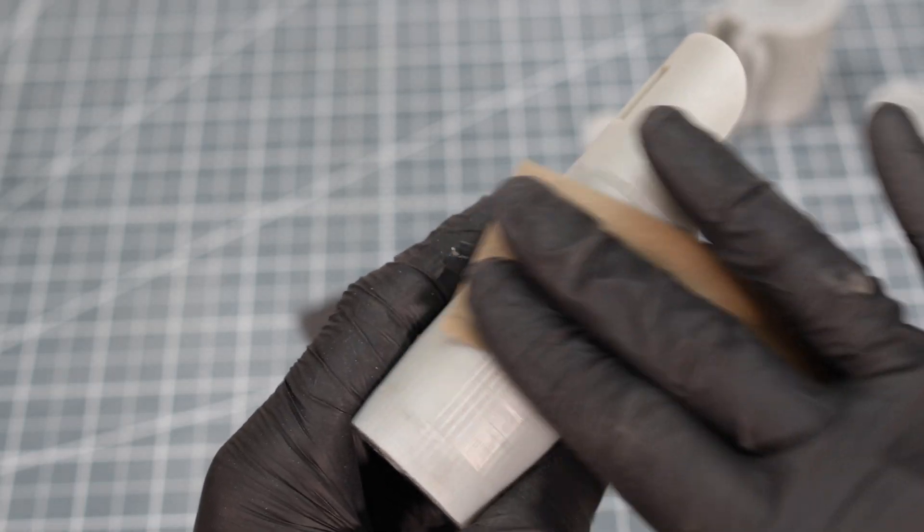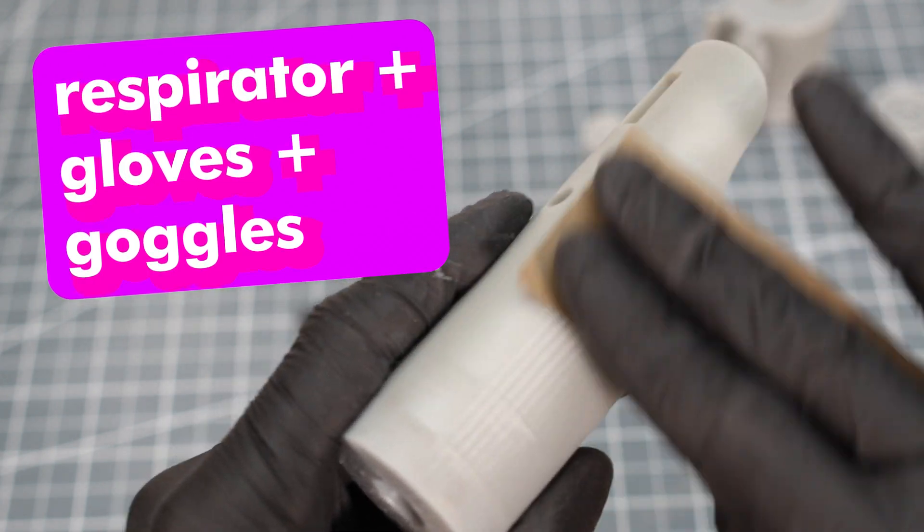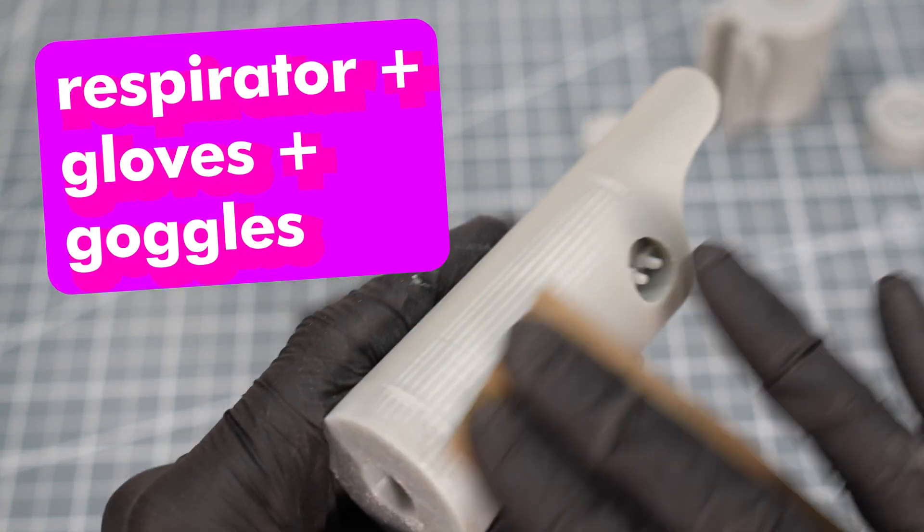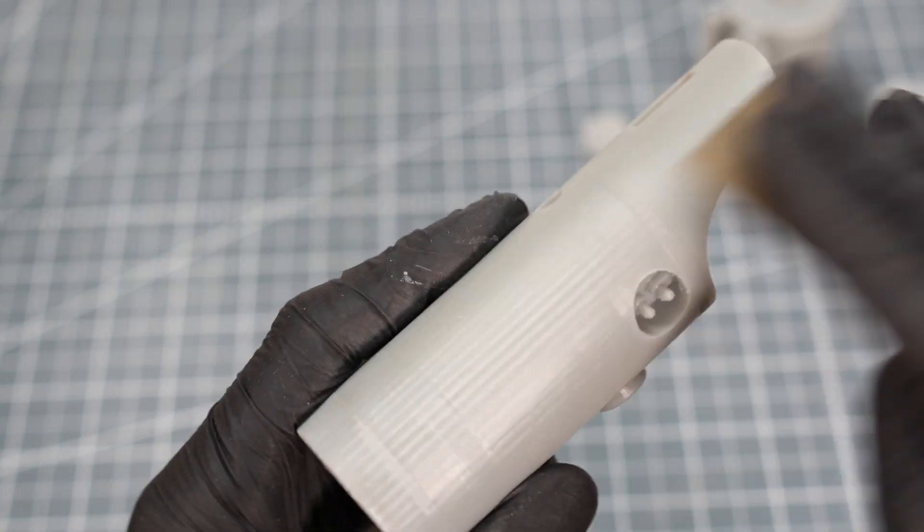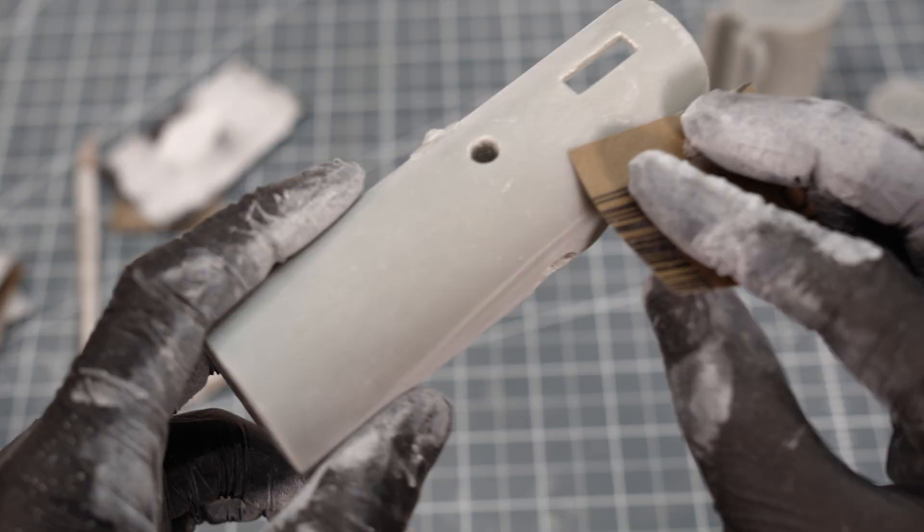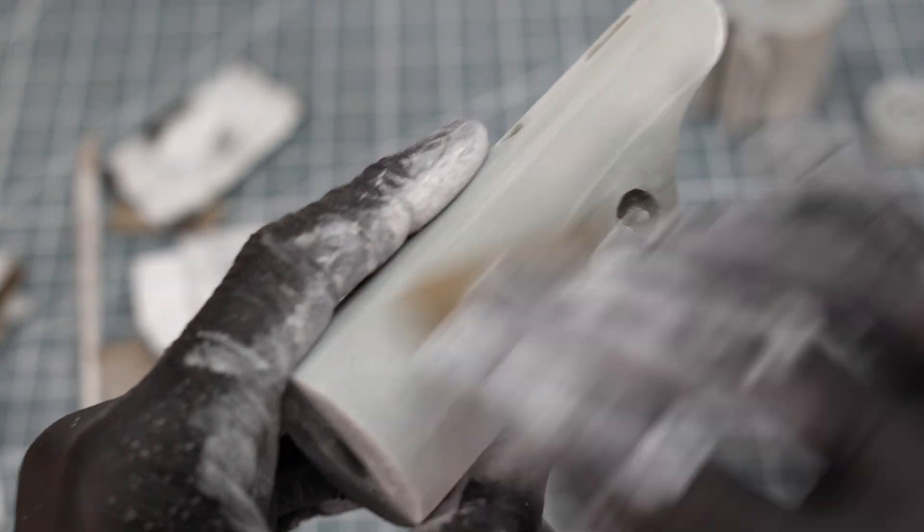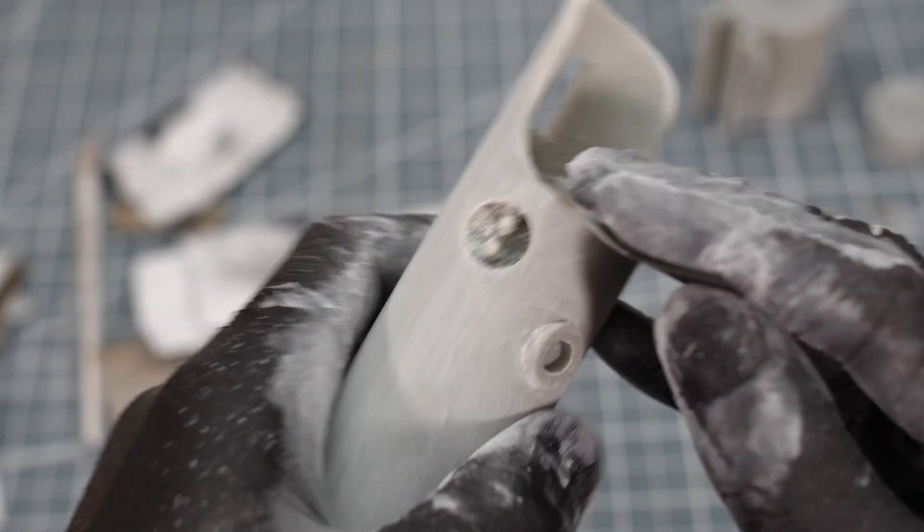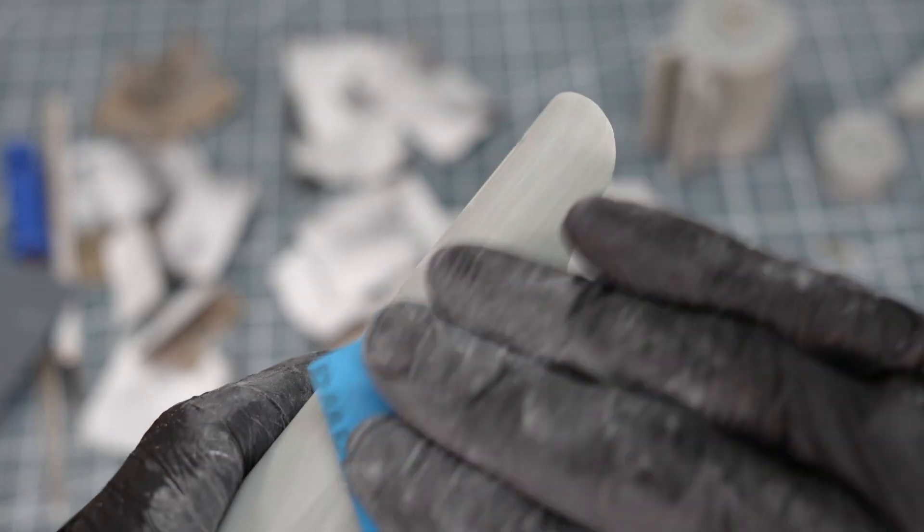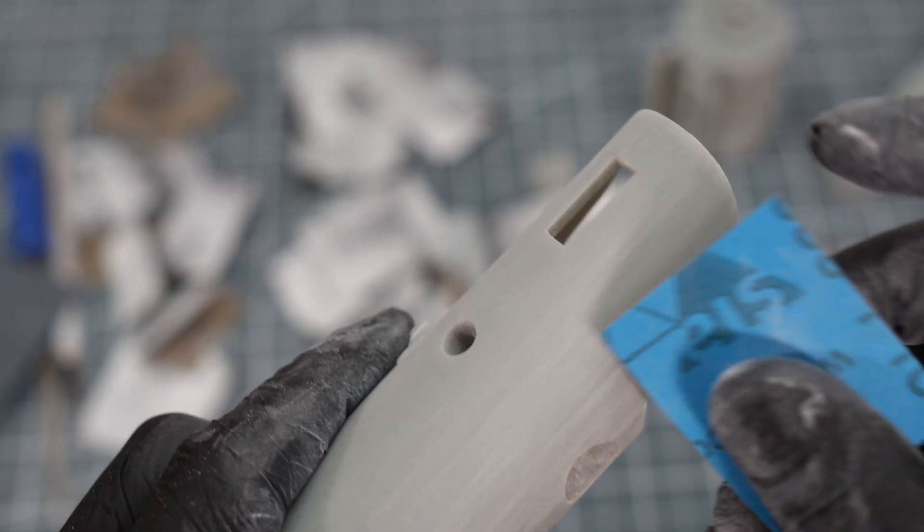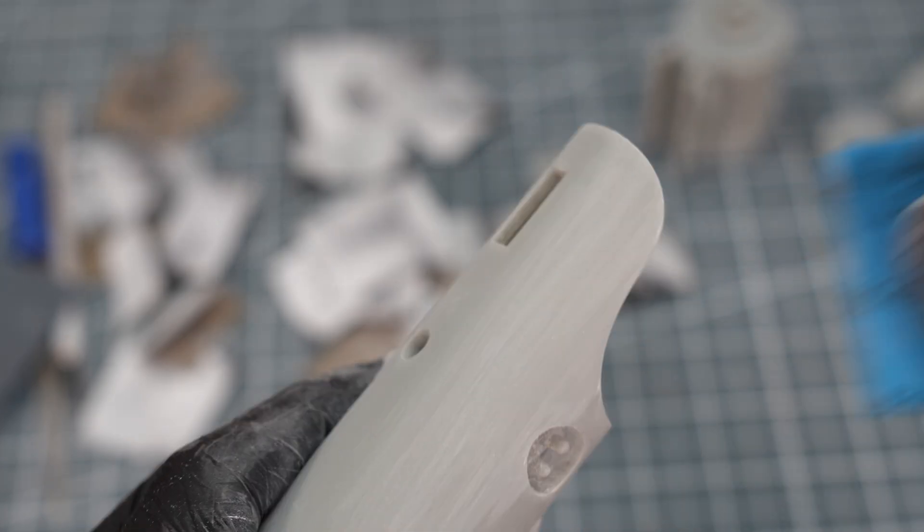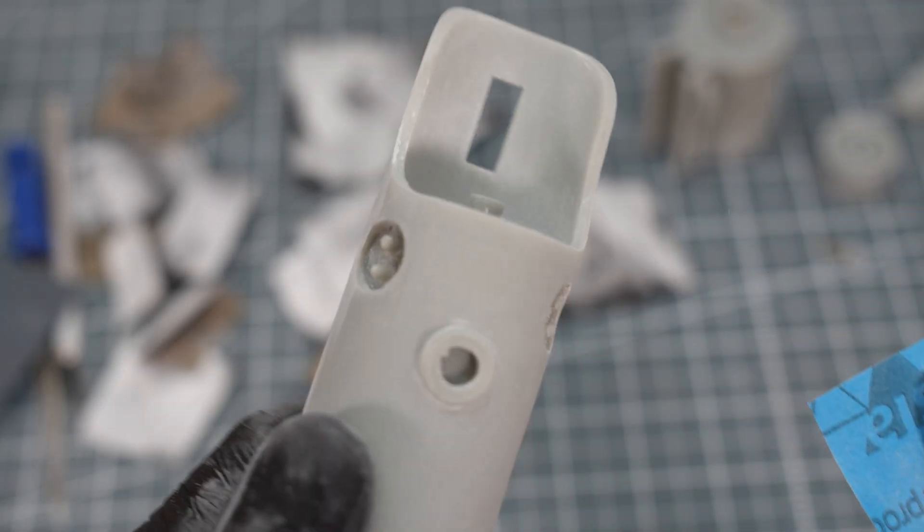When starting sanding, remember to wear a respirator and gloves. In general, I always recommend erring on the side of caution and wearing the maximum PPE. With this piece, you can see how important sanding is. Any irregularities will show up after electroforming. In fact, all mistakes are visible after electroforming. So it's crucial to take your time and put in a lot of effort during this initial sanding process.